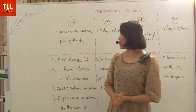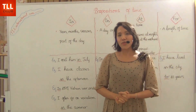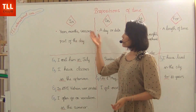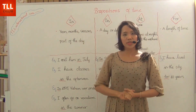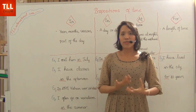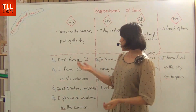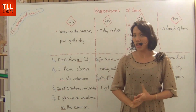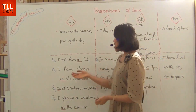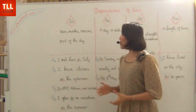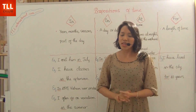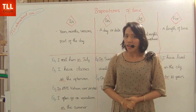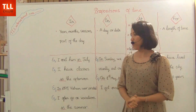The first preposition is 'in'. We use 'in' before years, months, seasons, or parts of the day. For example: 'I met him in July' — July is a month. Another example: 'I have classes in the afternoon', 'in the evening', 'in the morning' — these are periods of the day, so we use preposition 'in' before them.